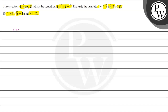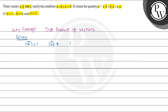The key concept involved is the dot product of vectors. Let's write what we have been given: |a| = 1, |b| = 4, |c| = 2, and a + b + c = 0. We also have to evaluate μ = a·b + b·c + c·a.